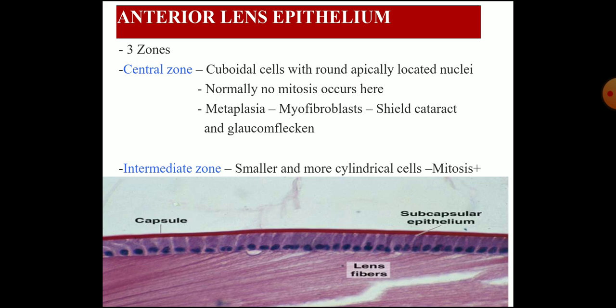The anterior lens epithelium consists of three zones. The central zone has cuboidal cells with round apically located nuclei; normally no mitosis occurs here. Metaplasia occurs here, forming fibroblasts, shield cataract, and the glaucomatous plug is also produced by this metaplasia.